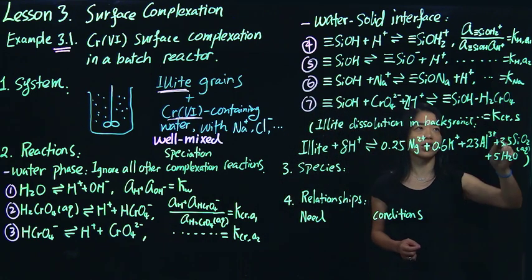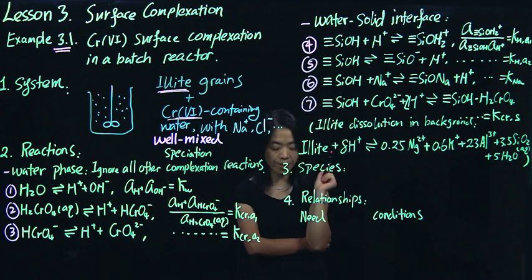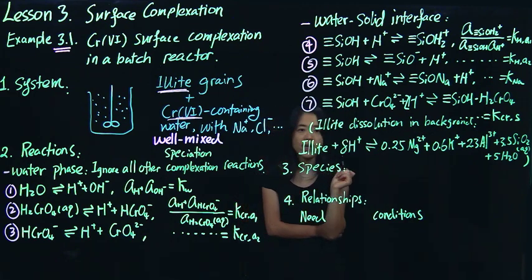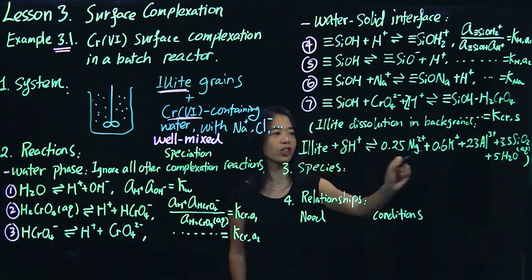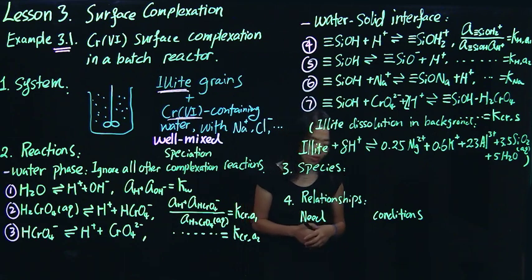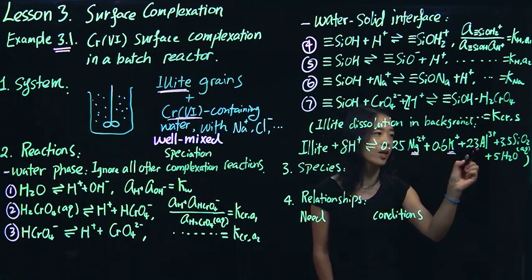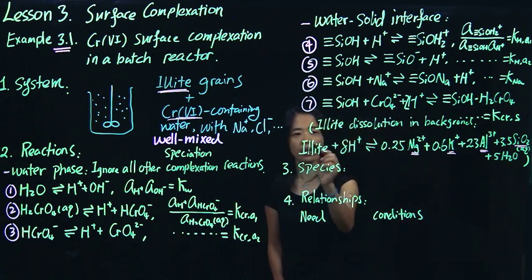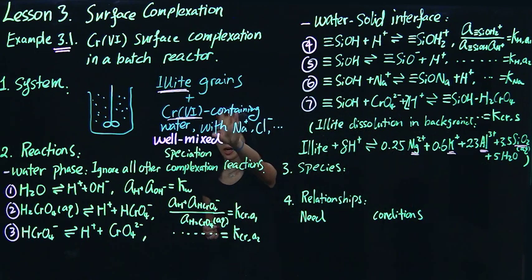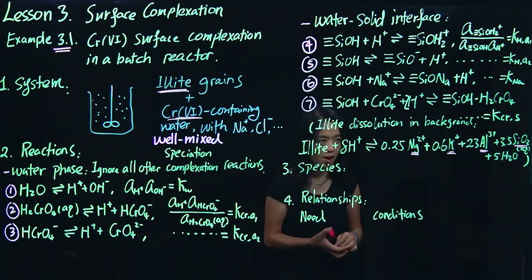As I mentioned, illite itself dissolves slowly. In CrunchFlow, we actually have this reaction in the background, except it occurs so slowly it doesn't change much of the chemistry. But when we set up the CrunchFlow input file, we do need to include these reactions and chemical species — these are the chemical components of illite that must be included as primary species.